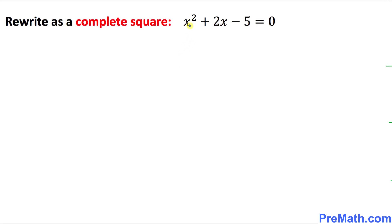We want to make sure that only x variables are on the left-hand side. That means this negative 5, the constant, must go on the other side. So we're going to end up with x squared plus 2x equal to positive 5 on the right-hand side.